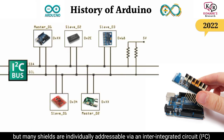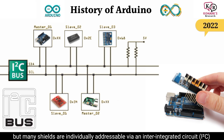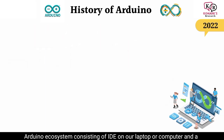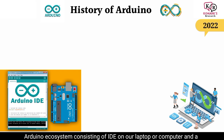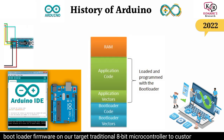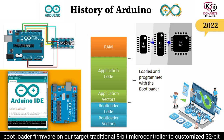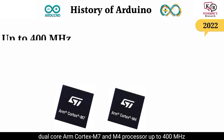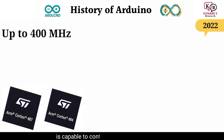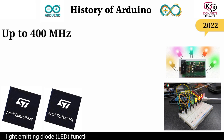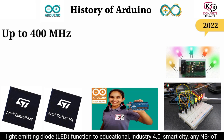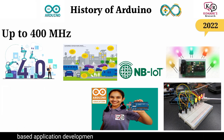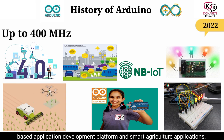Some shields can communicate directly with the Arduino board over various pins, but many shields are individually addressable via an Inter-Integrated Circuit (I2C) serial bus, so many shields can be stacked and used in parallel. The Arduino ecosystem consists of an IDE on a laptop or computer and a bootloader firmware on the target — from additional 8-bit microcontrollers to customized 32-bit dual-core ARM Cortex-M7 and M4 processors up to 400 MHz — capable of controlling everything from blinking an LED to educational IoT 4.0 smart city, narrowband IoT-based application development platforms, and smart agriculture applications.